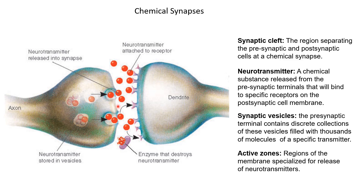The gap between these two neurons is called the synaptic cleft. This gap is very small, on the order of 20 to 40 nanometers. Through this gap the communication happens in the form of small chemical molecules called neurotransmitters, which can go and bind to receptors on the dendrite, called the postsynaptic receptors. Before they are released, neurotransmitters are contained in small pouches in the axon terminal called synaptic vesicles. Each vesicle may contain a few hundred or a few thousand neurotransmitters. When the time is right, these vesicles fuse with the membrane and release neurotransmitters into the synaptic cleft, and this releasing happens only at specific regions called the active zones.